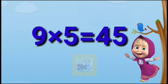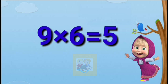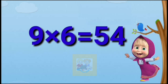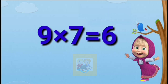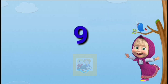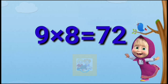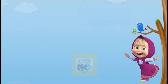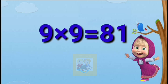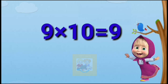Nine fives are forty-five. Nine sixes are fifty-four. Nine sevens are sixty-three. Nine eights are seventy-two. Nine nines are eighty-one. Nine tens are ninety.